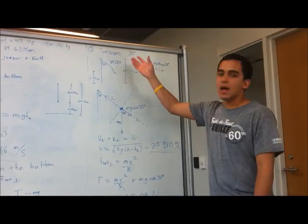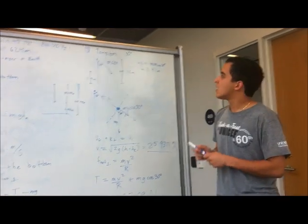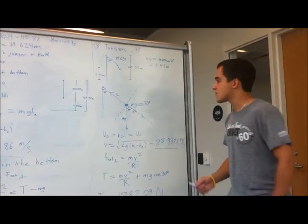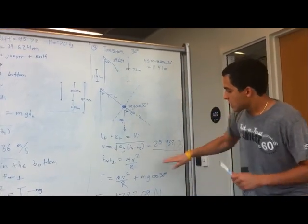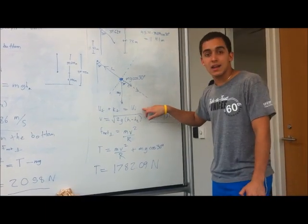Now, we are going to analyze the tension at 30 degrees, the same way as we did at the bottom. As you know, it's an ideal rope. Here we need velocity, so we are going to do it by analyzing energies.